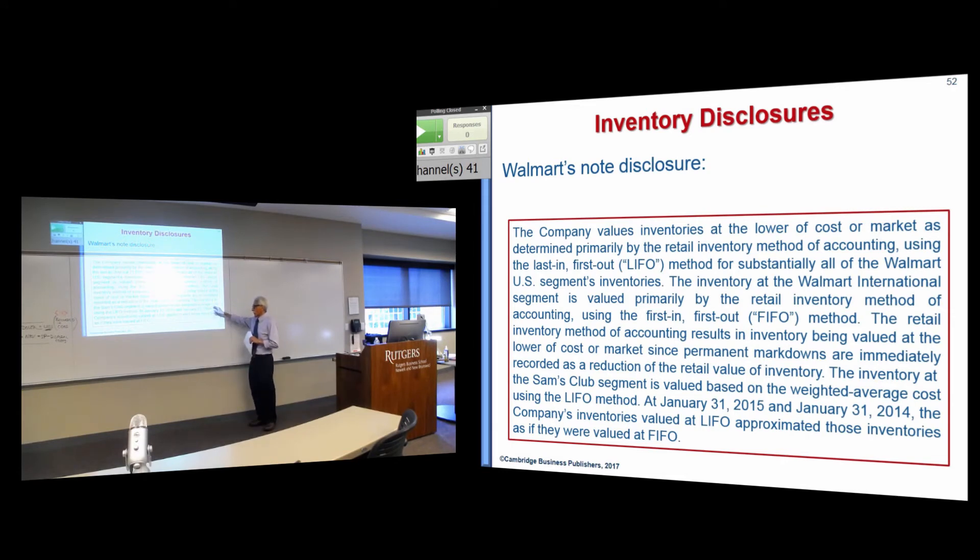They also use, for Sam's Club, they use the weighted average cost approach for LIFO. Now, what's that? That is a LIFO method that we'll see in intermediate accounting, where rather than taking individual prices, they take the average for the year. But they still do it on a LIFO basis. So, all of your inventory for this year would be at the 2016 average. All of the inventory last year would be at the 2015 average. And you would just group all your inventory together as well. And then finally, they tell you the company's inventory values at LIFO and FIFO approximated each other. So, that means what's the LIFO reserve equal to? Zero. There's a nominal difference between LIFO and FIFO.